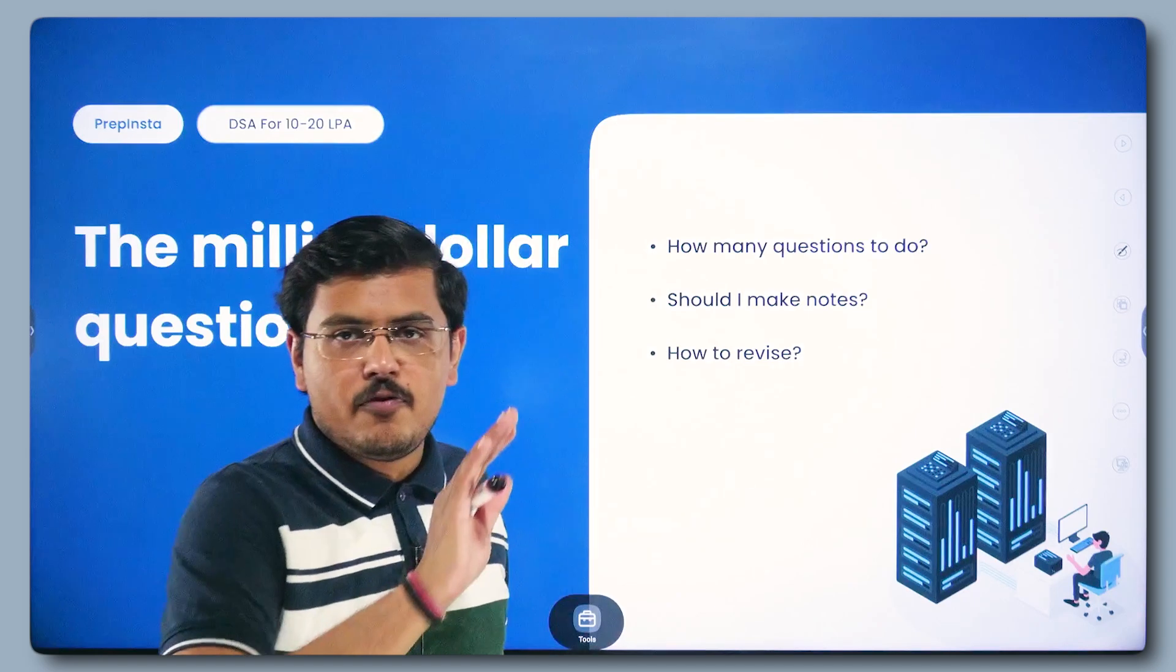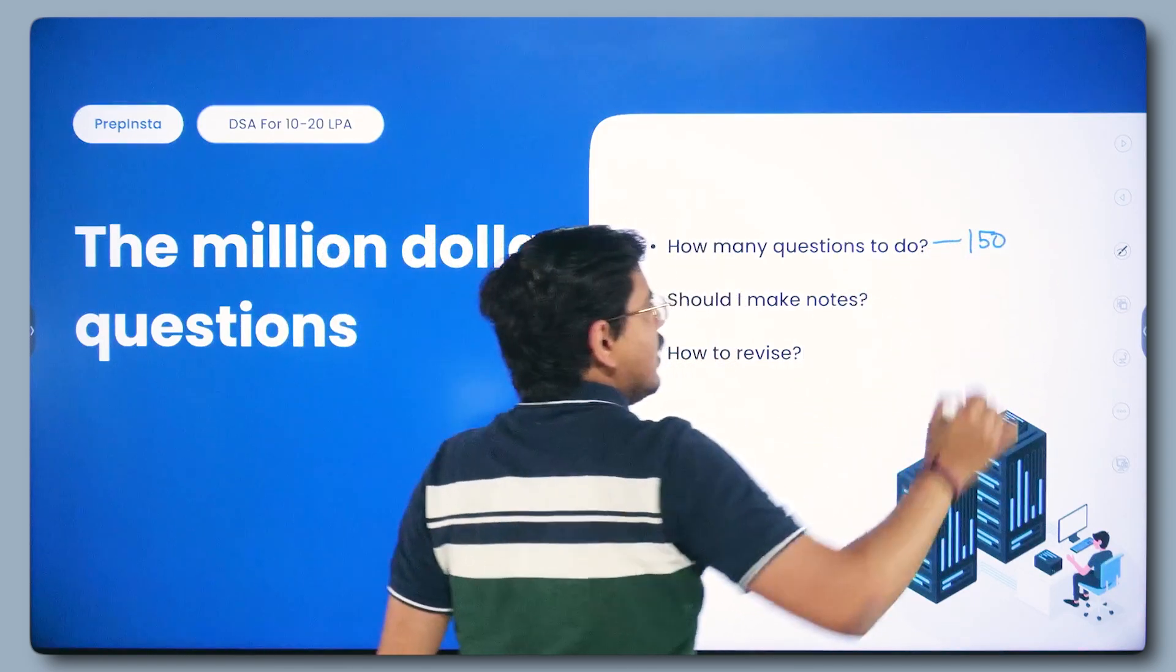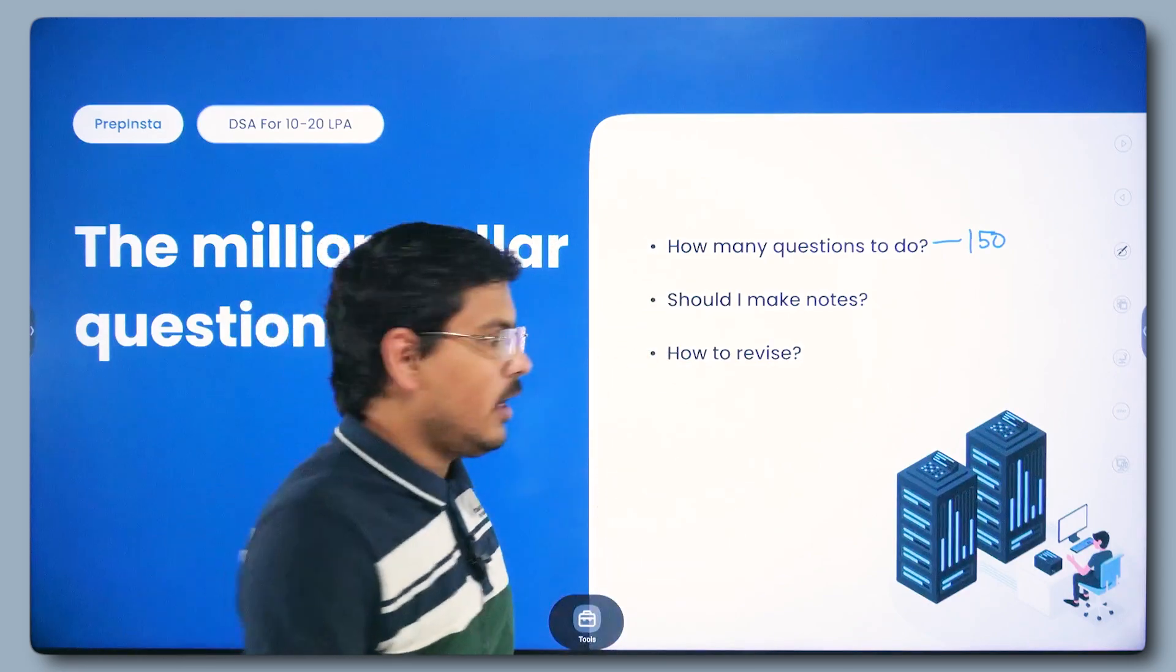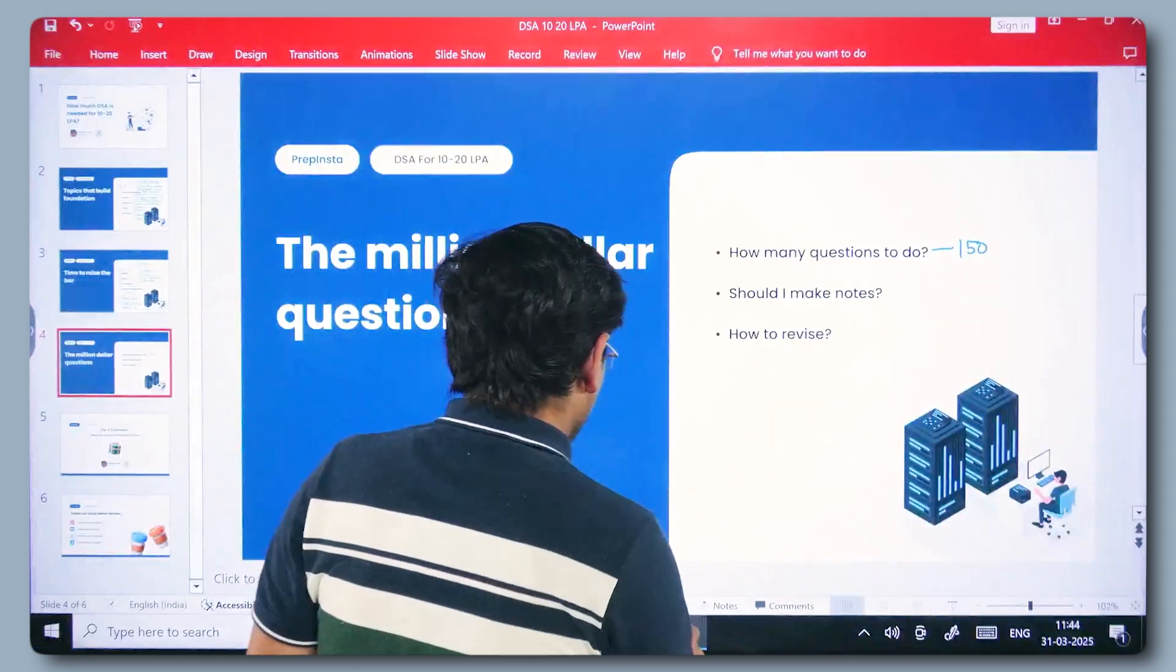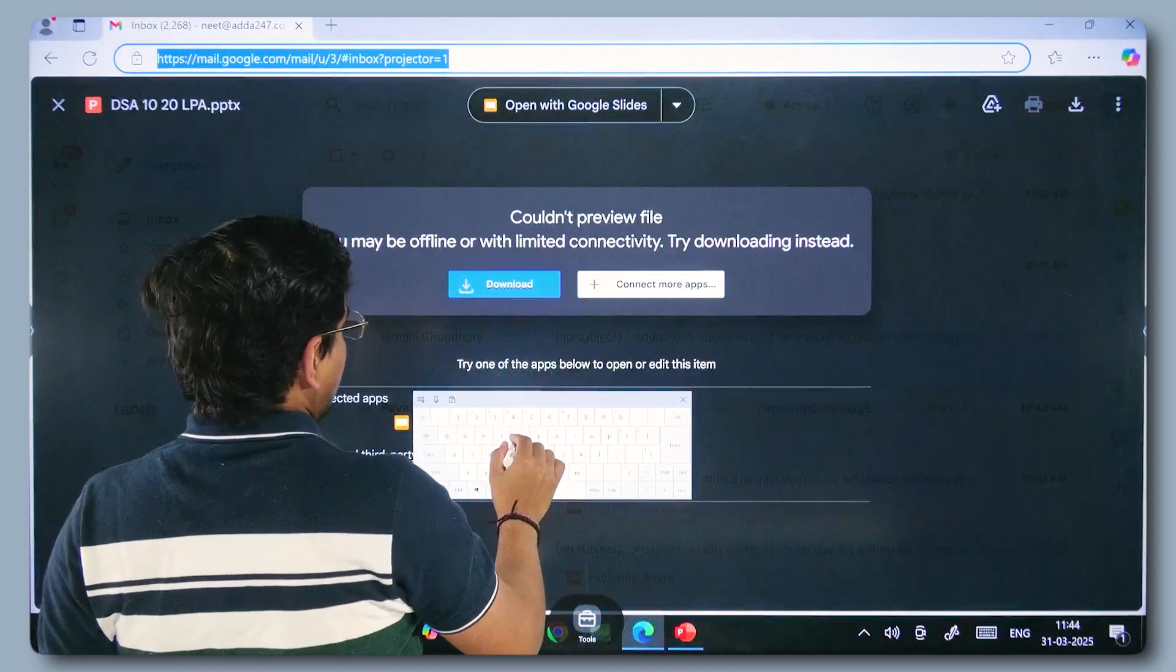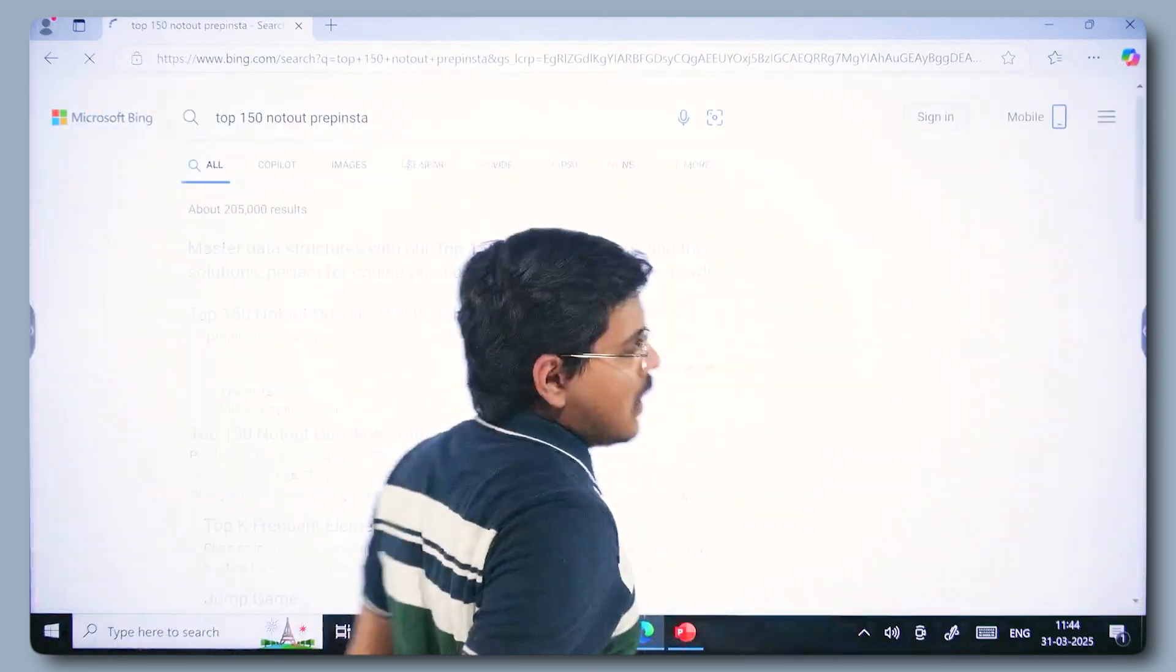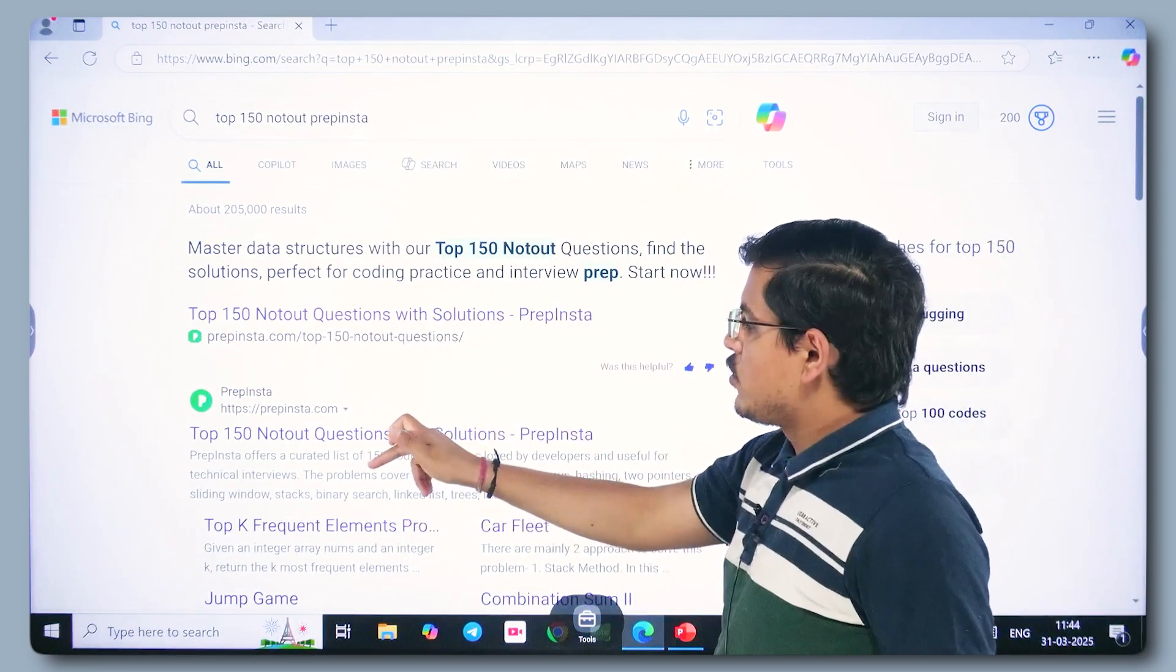The number for how many questions to do, what questions to do is very easy. The number is 150 and all of you know the answer where this 150 is coming from. If you are a regular watcher on this channel, then you will be knowing what I am exactly talking about. All you need to search is go on Google, search top 150 LeetCode prep insta. You will find the link in description box to this list. You simply click here.